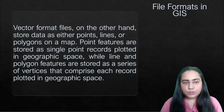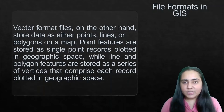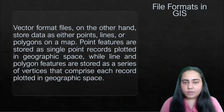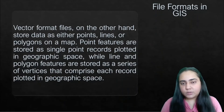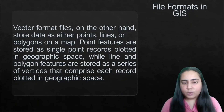Point features are stored as single point records plotted in geographic space. For example, if you're plotting a McDonald's store in a city, you would represent it on the map as a small dot — a single point. It has only one x and y coordinate, so it would be plotted using a point.